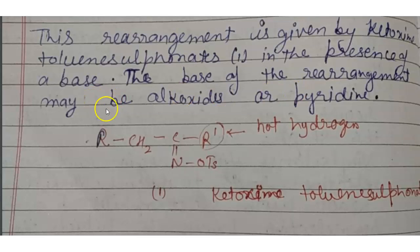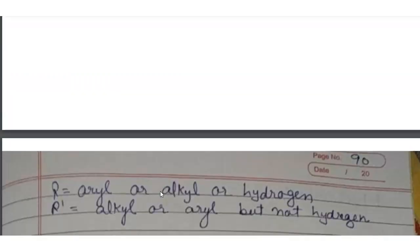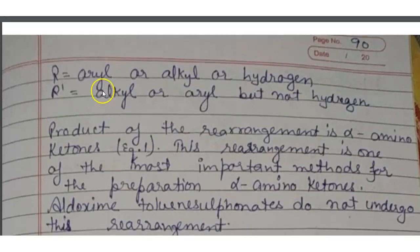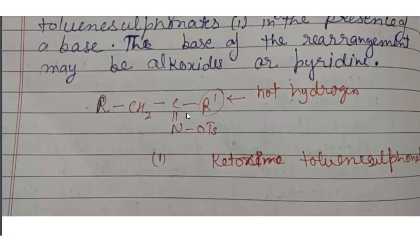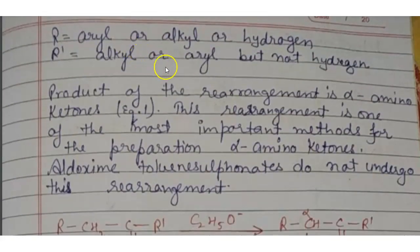The base of the rearrangement may be alkoxide or pyridine. R is aryl, alkyl, or hydrogen. Here is the R, it will be alkyl, aryl or hydrogen, but R' is not hydrogen. R' is alkyl or aryl but not hydrogen.